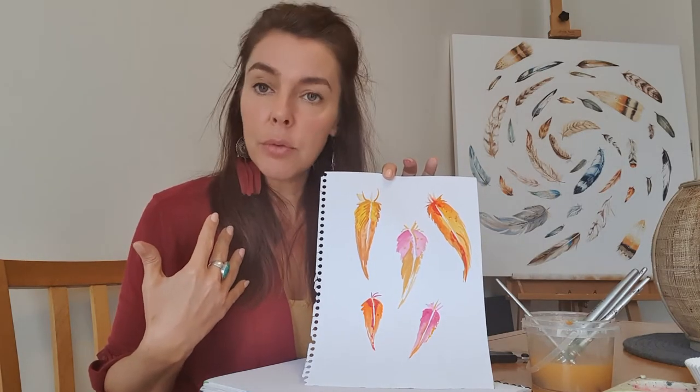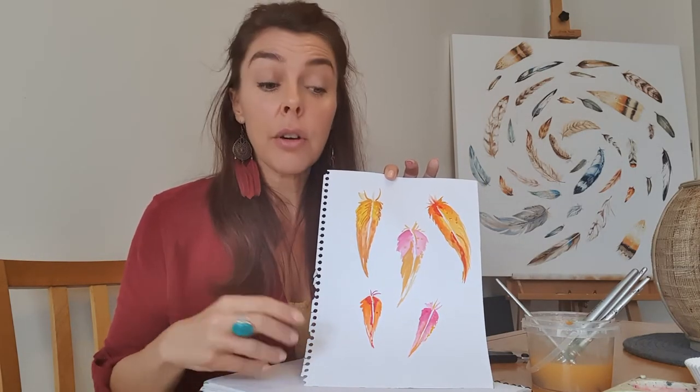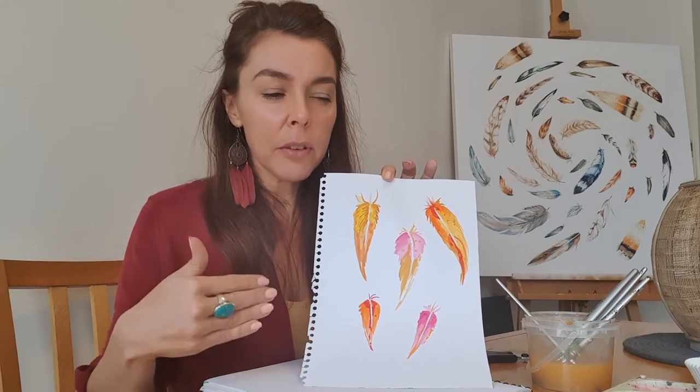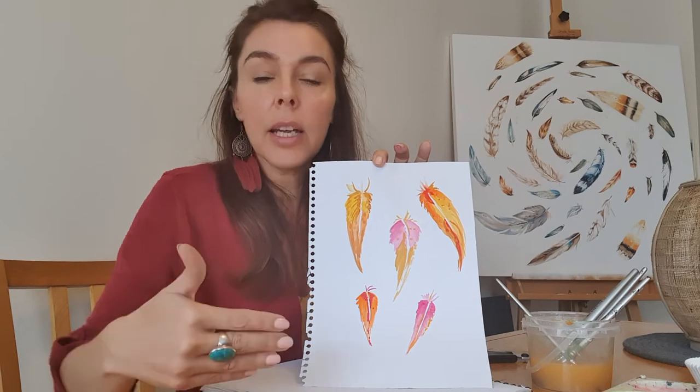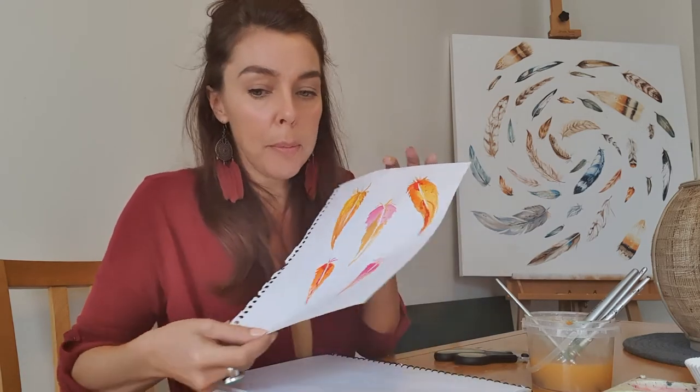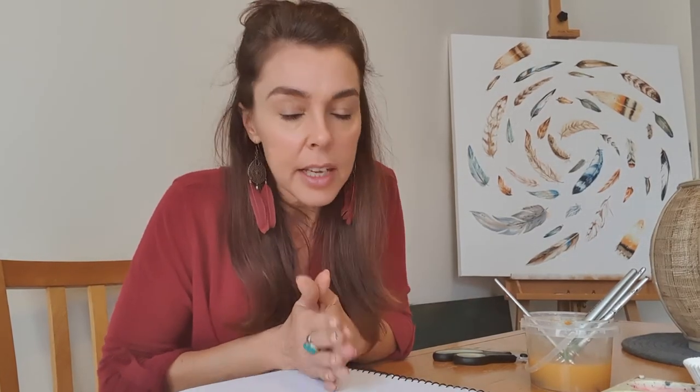A greeny blue will go off into the background, but if you've got a blue with a little bit of red in it, like a purpley blue, it is actually a warm purpley blue. Warm and cool colors can get a little tricky. The easiest way to talk about them is to say that anything with yellow or red in it is a warm color, and anything with blue or green in it is going to be a cool color.